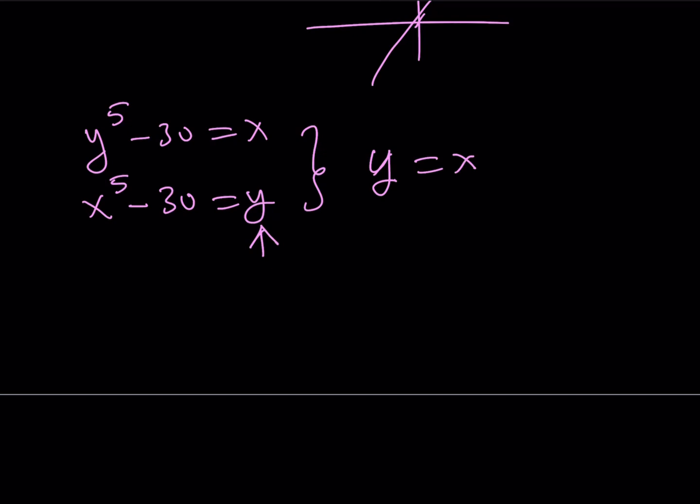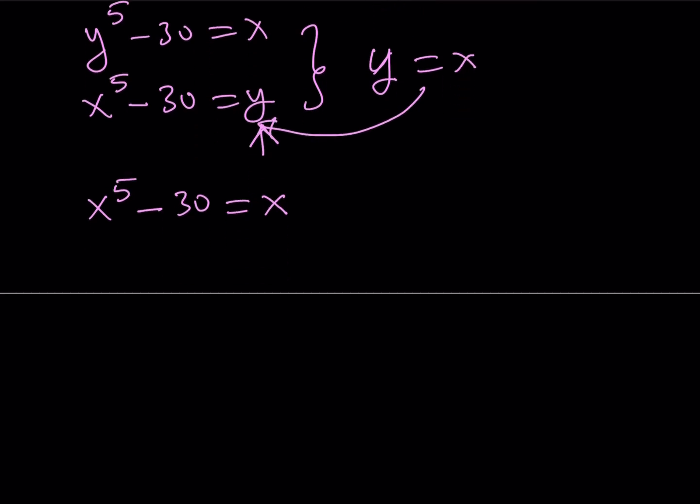Let's replace y with x. It wouldn't matter either case. It will be the same thing. Replace y with x and you're going to get x^5 - 30 = x. Notice that I just replaced y with x here. So I went from one variable to two variables and then I went back to a single variable.